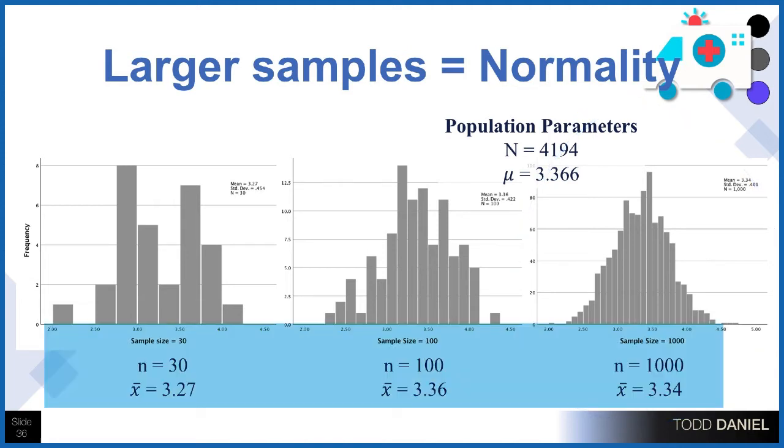With n = 30, the mean was 3.27, the mean of all these samples, which is pretty close to the population mean of 3.366. When we jump up to 100 cases, we have a mean of 3.36, which is spot on to our population parameter. With our sample size of 1,000, we're still really close, off by only two hundredths of a point. With increasing sample sizes, we're getting much closer to the true population value.